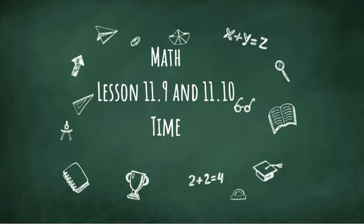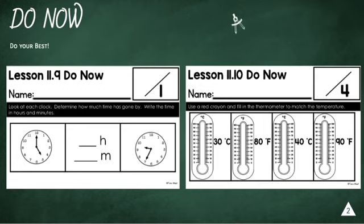Lesson. Today is lesson 11.9 and 11.10 on time. Do now. Lesson 11.9. Look at each clock. Determine how much time has gone by. Write the time in hours and in minutes.